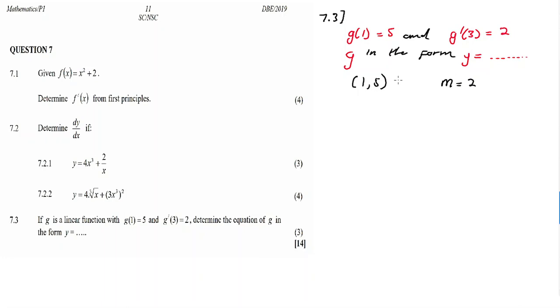Or we can say this (1,5) is a point of contact, and then this is the gradient. But it's just a point, a random point on a function, and then we are given a gradient. But we need to determine the equation of g. So as you may remember from analytical geometry, the equation for a straight line is calculated using this formula, y minus y1 equals m times x minus x1.